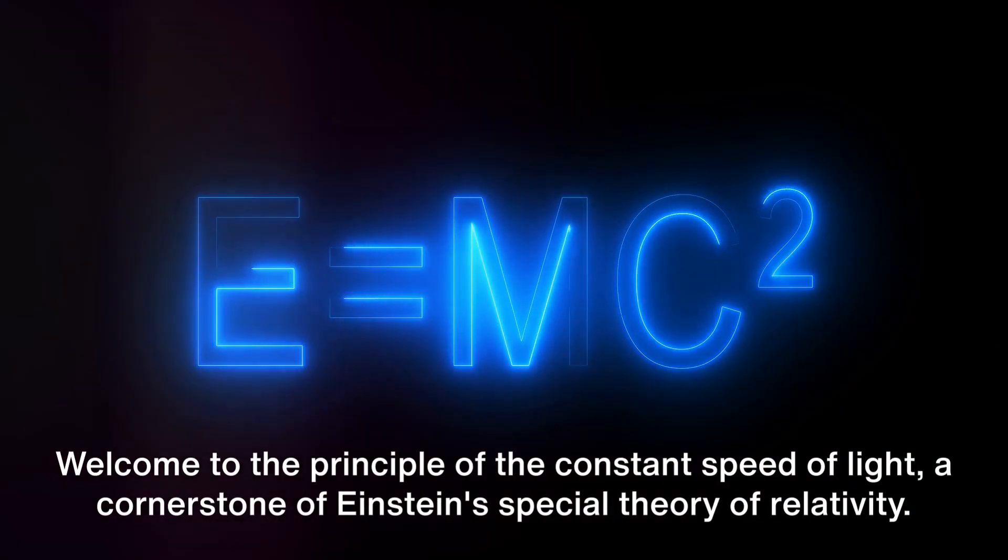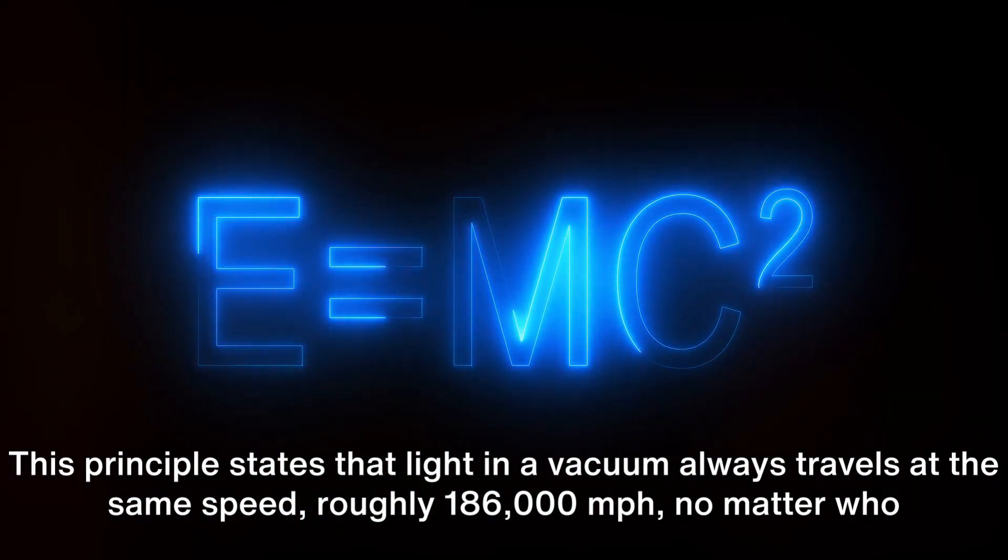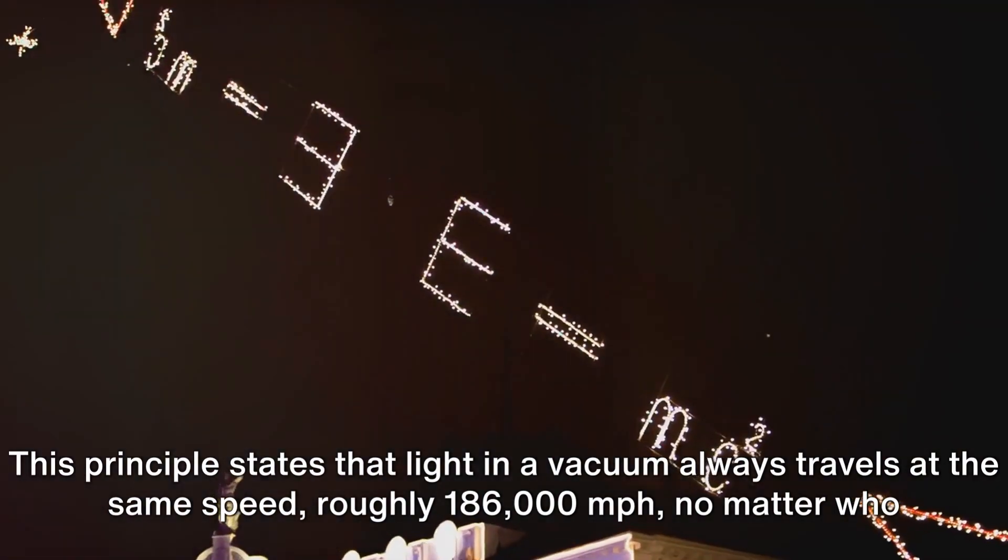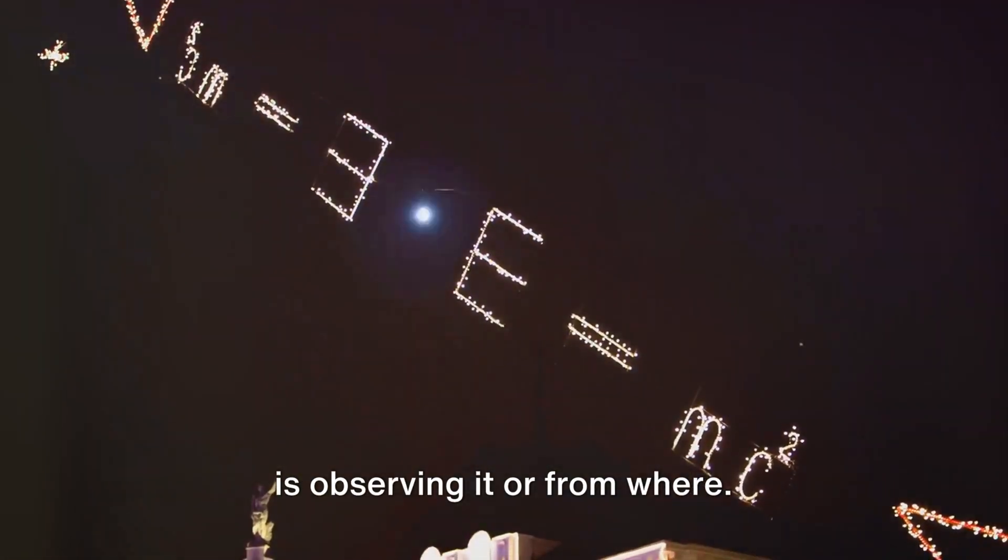Welcome to the principle of the constant speed of light, a cornerstone of Einstein's special theory of relativity. This principle states that light in a vacuum always travels at the same speed, roughly 186,000 miles per second, no matter who is observing it or from where.